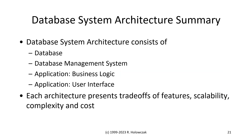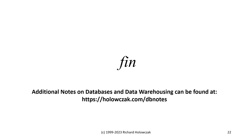As a summary, the database system architecture consists of the database, the DBMS, the business logic, and the user interface. As you've seen, each architecture presents some trade-offs in terms of features, scalability, complexity, and cost. Thanks for watching. Additional notes on database and data warehousing can be found at holozac.com, and I'll see you in the next video.